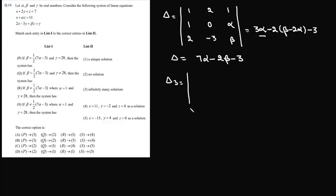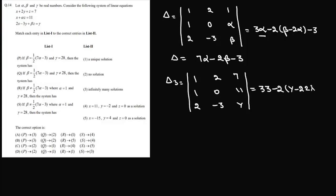We have both alpha and beta in the third column. So we'll also find delta 3. Delta 3 will be the determinant 1, 2, 7 / 1, 0, 11 / 2, -3, gamma. This gives us 33 minus 2 gamma minus 22 minus 21, so that will be 56 minus 2 gamma. We have now worked out delta and delta 3.